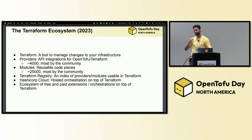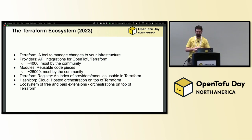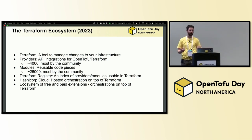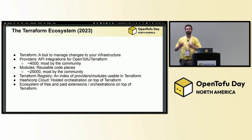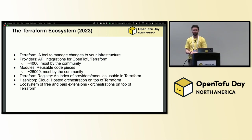HashiCorp Cloud was created and popularized around 2023 as a hosted orchestration platform on top of Terraform — an ecosystem of free and paid extensions and orchestrations. Most of the companies here in some way or form supported Terraform and built additional components on top of it. It's this ecosystem that really blossomed over the past 10 years and a lot of people invested in. It means a lot to a lot of people and there's a lot of hours invested in it.